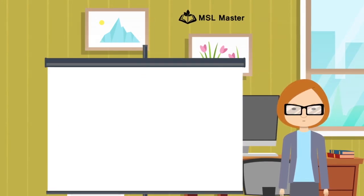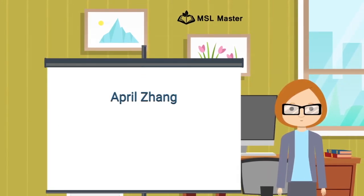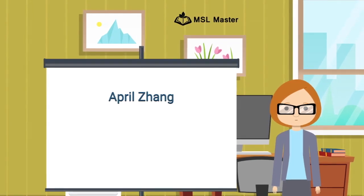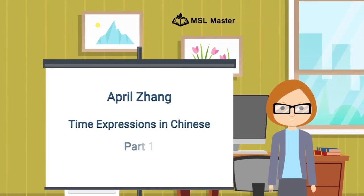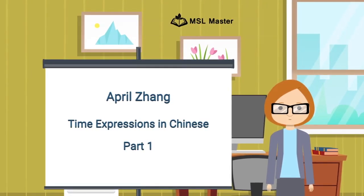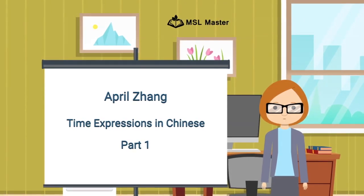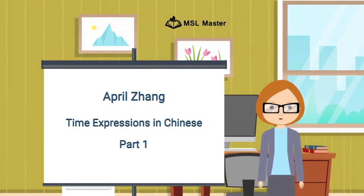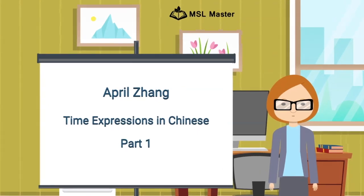Hello everyone, this is our Chinese teacher April. Today we start lesson 3 in the book, learning 10 new characters which are frequently used in time expressions such as morning and 2 o'clock. Grab a pen or pencil, let's start reading and writing these characters.